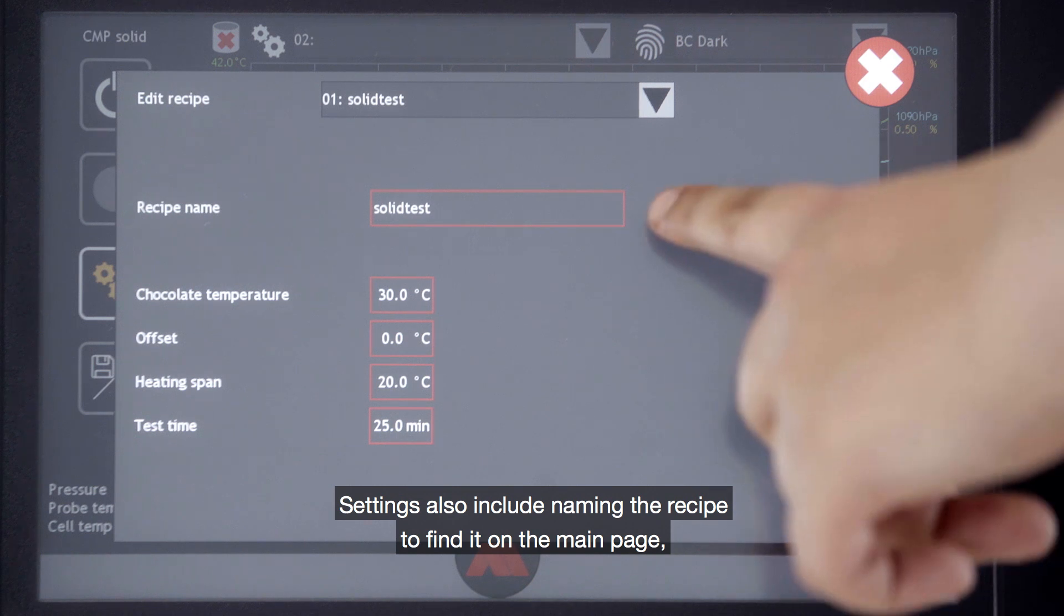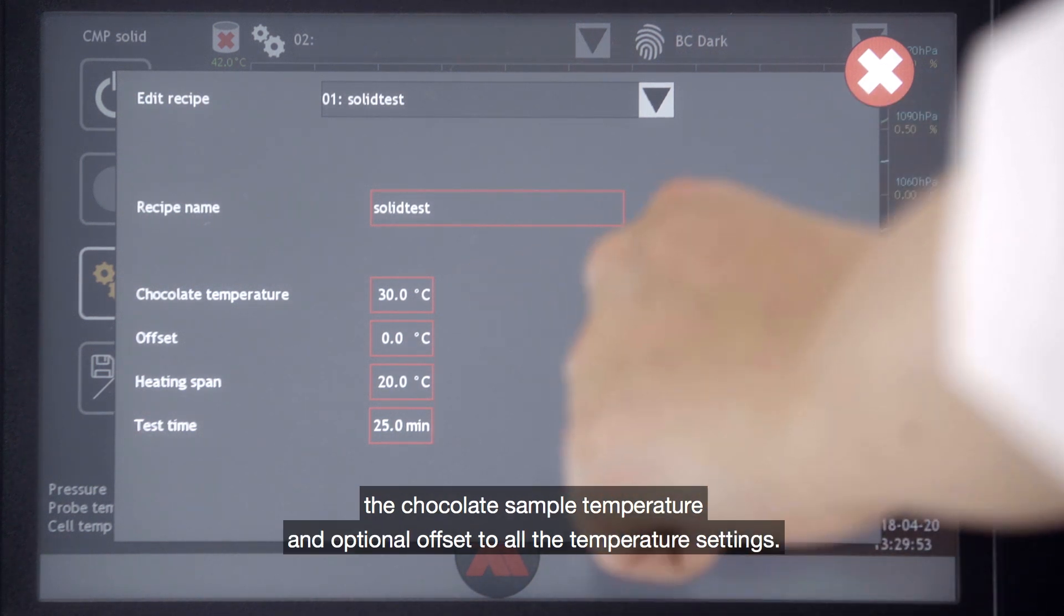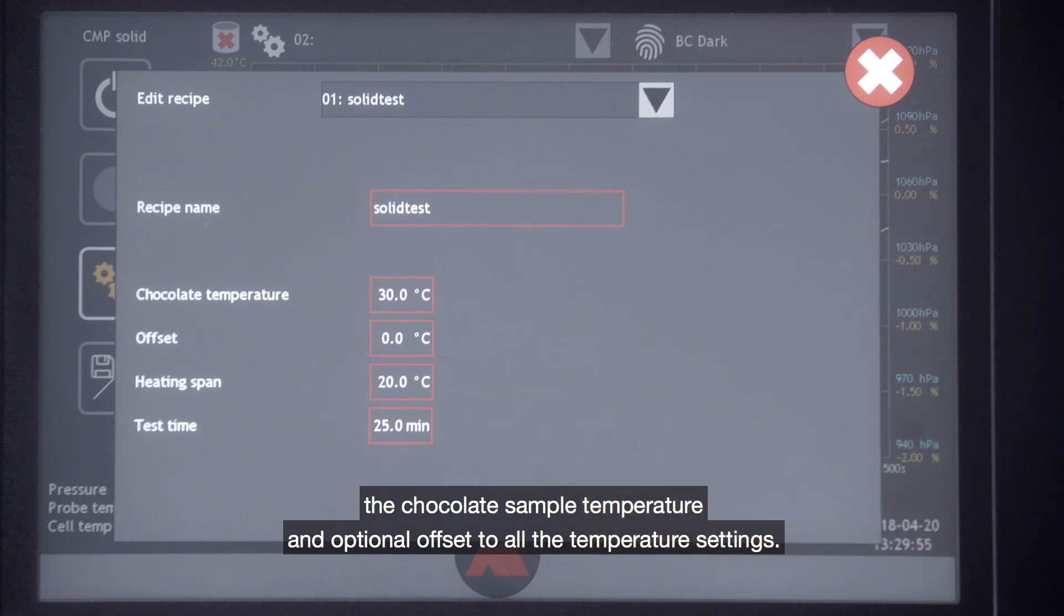Settings also include naming the recipe to find it on the main page, the chocolate sample temperature, and the optional offset to all temperatures.